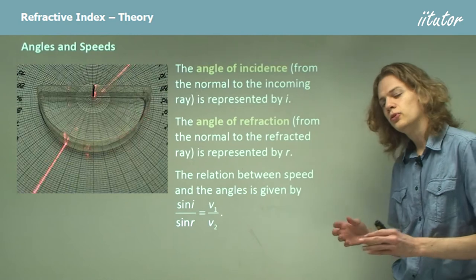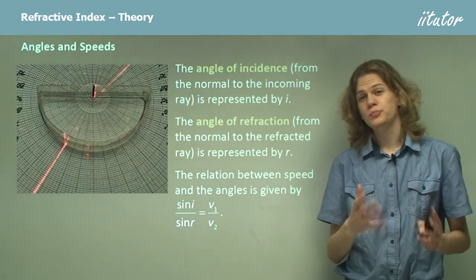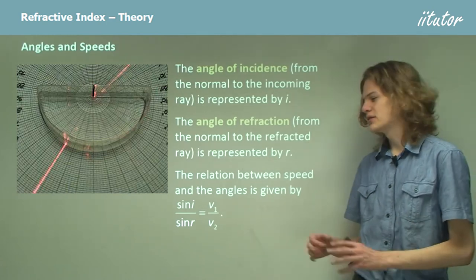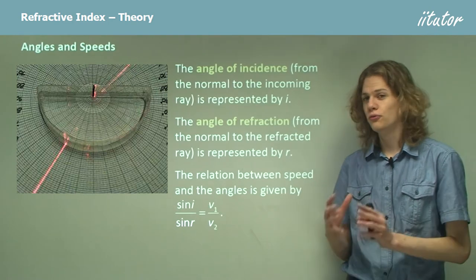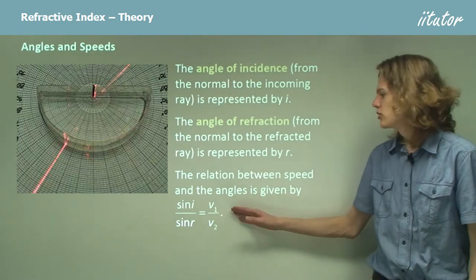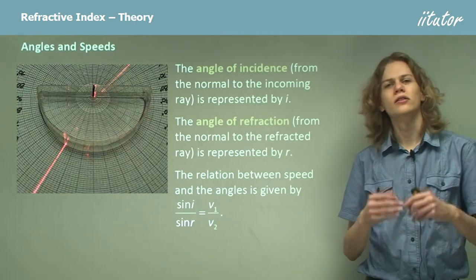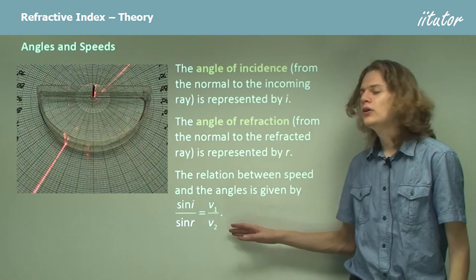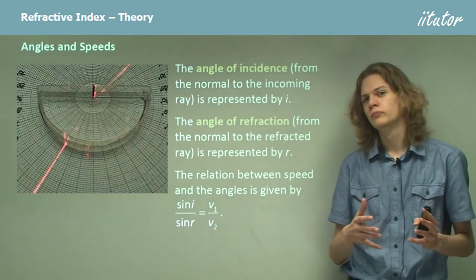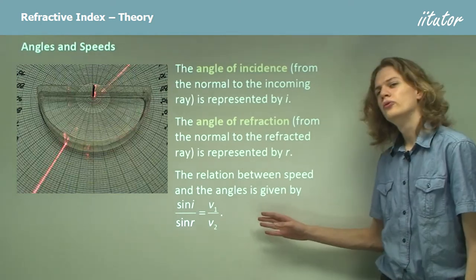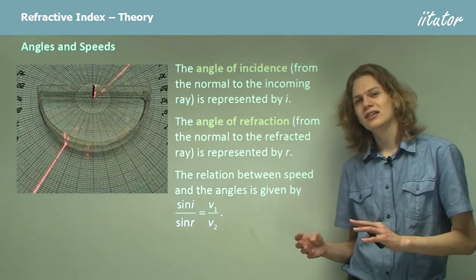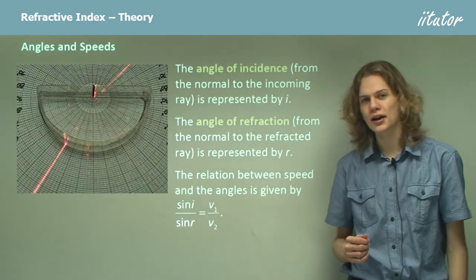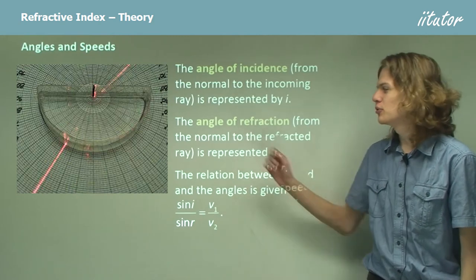The relation between the angle which light travels through and the speed at which it's traveling is given by this equation: the sine of the incident angle over the sine of the refracted angle equals V1, the speed of light in the first material where the incident ray is, over V2, the speed of light in the second material. Using this we can figure out how fast light travels inside different materials based on the angles formed when it refracts, which can be measured with a protractor as shown in this photograph.